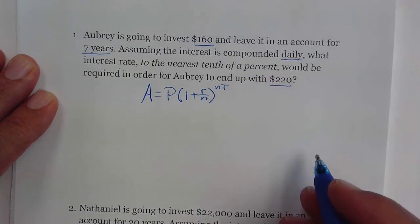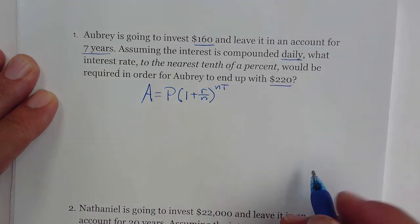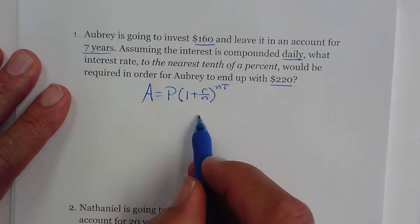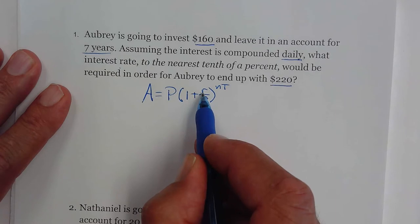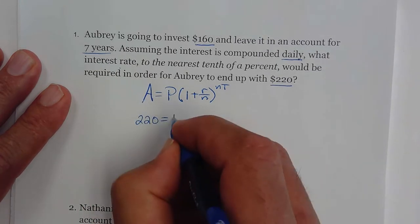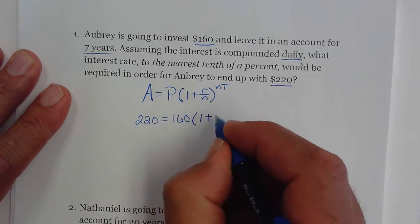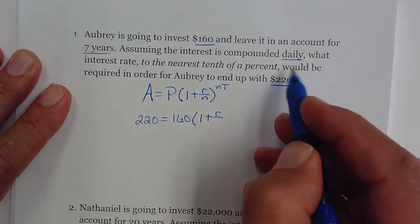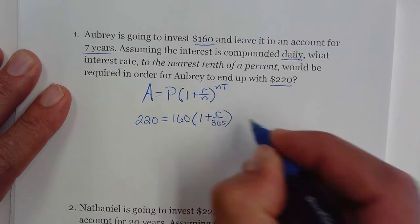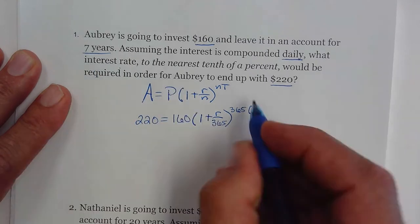Now in this problem right here, we're going to be solving for this rate, so it's a little bit tricky. We're going to put everything we have where it goes. We know we want to end up with 220, we know we're going to deposit 160, and that's 1 plus r over the compounding frequency which is daily, so that's 365, and that's 365 times the seven years.